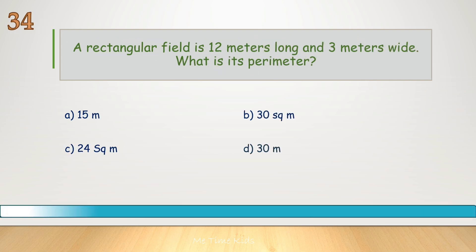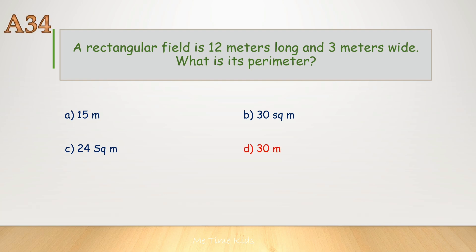A rectangular field is 12 meters long and 3 meters wide. What is its perimeter? Correct answer is D, 30 meters.